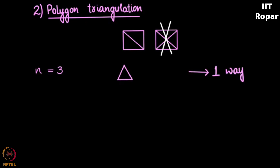When n is equal to 4, I have a square. How do I triangulate it? I have to construct triangles, and there are two possibilities, so two ways.